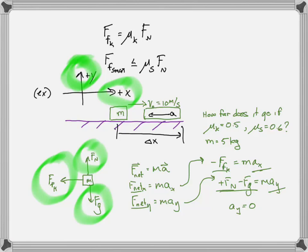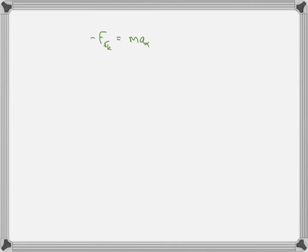Going through the steps again: draw a picture, write down axes, draw a free body diagram, take components, write F_net = ma in component form, plug in F_net from the FBD, then plug in for acceleration and mass. M is 5 kilograms. So at this point we have: −FFK = m·ax where m = 5 kg.